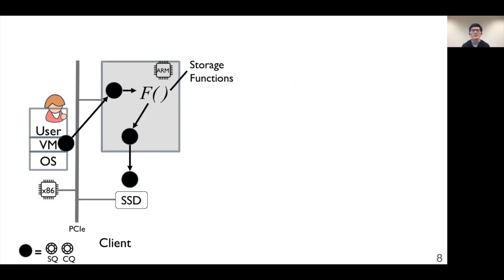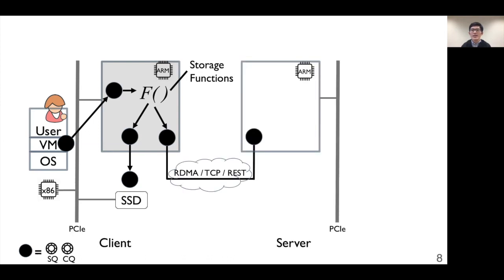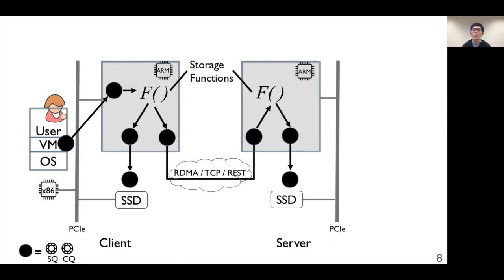Moreover, these benefits extend to a disaggregated setup. If the user stores data in remote SSDs or services, the client runtime simply forwards IO requests to the server runtime via TCP, RDMA, or REST API through the NIC. The server-side LibIO runtime prepares incoming commands and data by polling on queues connected to the client side, then invokes the server-side storage function running in user level within the SOC. The server-side service can then forward IOs to one or more NVMe drives or remote services.